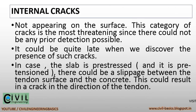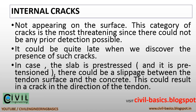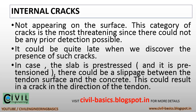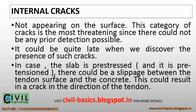Let's discuss the internal cracks. Internal cracks will not appear on the surface. This category of cracks is the most threatening since there could not be any prior detection possible — it could be quite late when we discover the presence of such internal cracks. In case the slab is pre-stressed and pre-tensioned, there could be a slippage between the tendon surface and the concrete, which could result in a crack in the direction of the tendon.